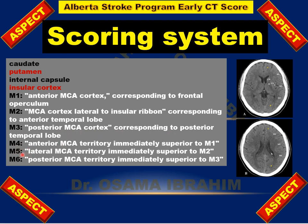M4, M5, and M6 correspond to the superior level or supraventricular level, directly above M1, M2, and M3 respectively. So M4 is anterior, M5 is middle, and M6 is the posterior segment of the territories supplied by the middle cerebral artery.